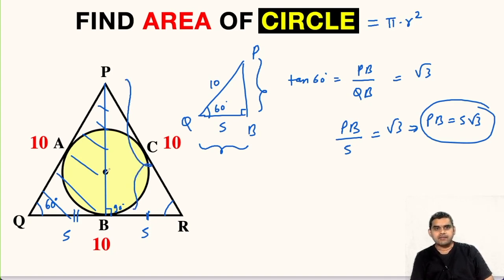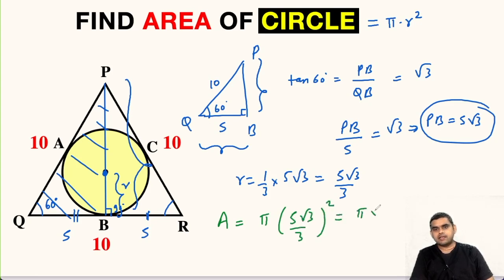Now our aim will be to find this distance r. We know the property of centroid again. So r will be equal to one third of 5 root 3. So the radius will be 5 root 3 upon 3. So area of this circle will be pi times 5 root 3 divided by 3 whole squared which is pi times 25 times 3 upon 9. 3 and 3 cancelled. So this will be 25 pi upon 3 square units.